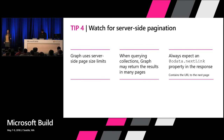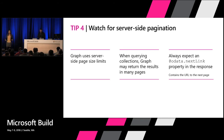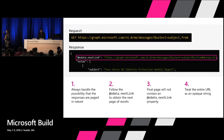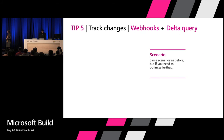Tip number four: server-side pagination. Microsoft Graph does server-side pagination. If you make a request and get back 20 users, it doesn't mean 20 is the total number in your organization — that's just the page size Microsoft Graph returned. We use next links to give you the next page. For example, calling into the messages resource, you get an OData next link showing the next page. These next links are completely opaque — don't take dependencies on them. Just follow the link and it will take you to the next pages until there are no more.